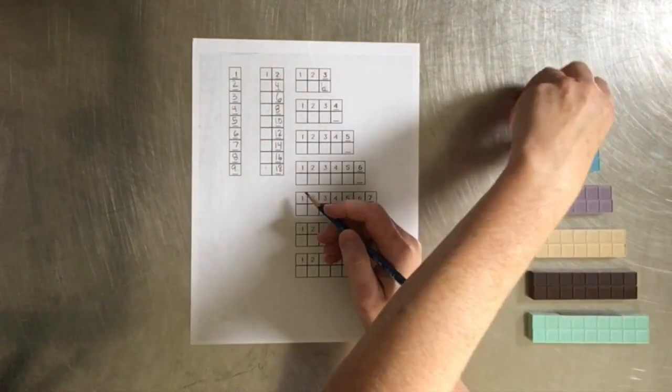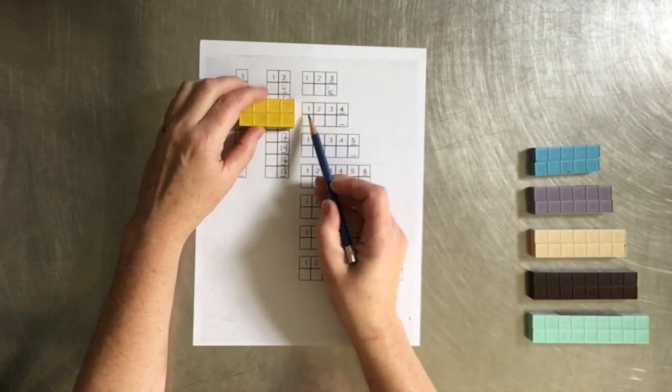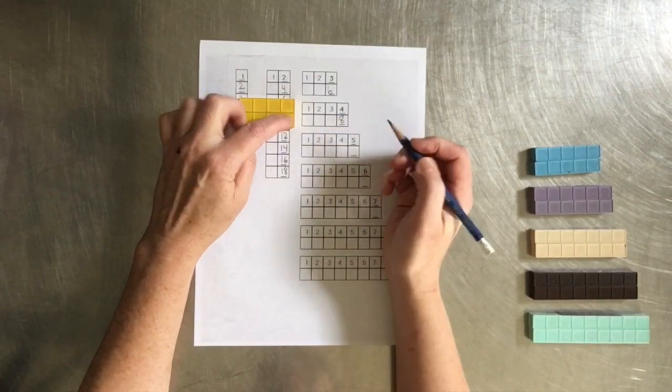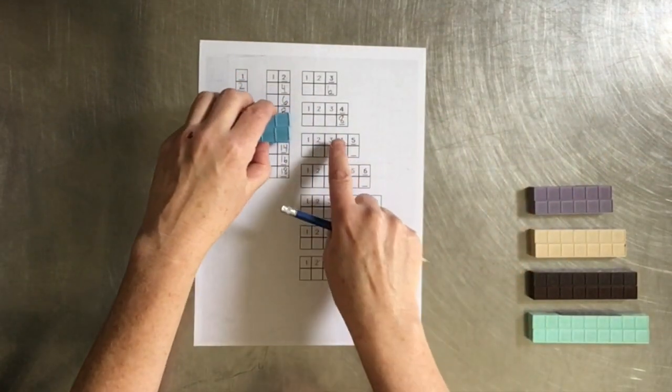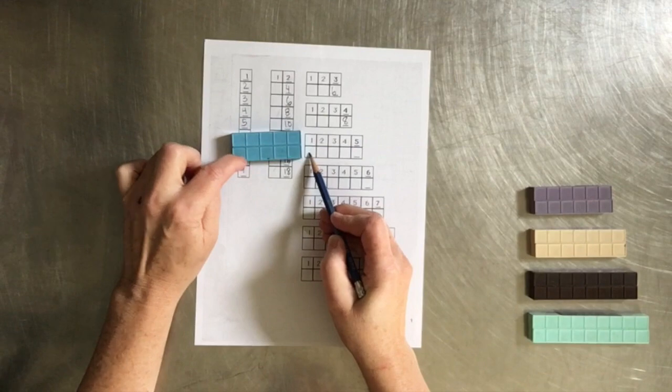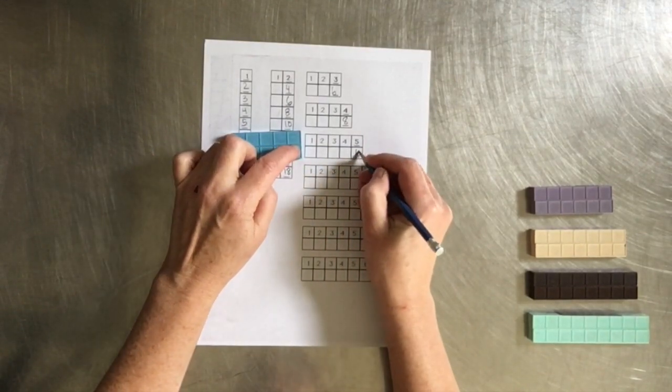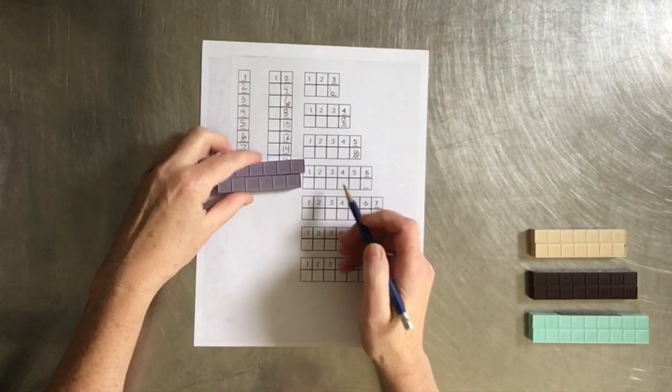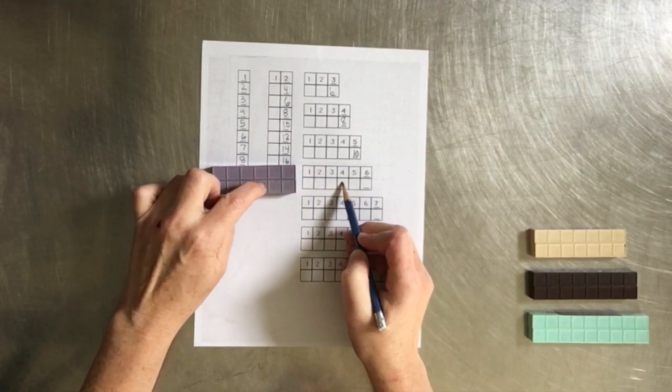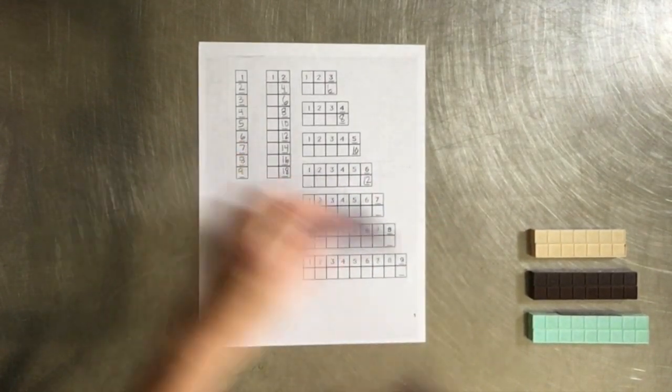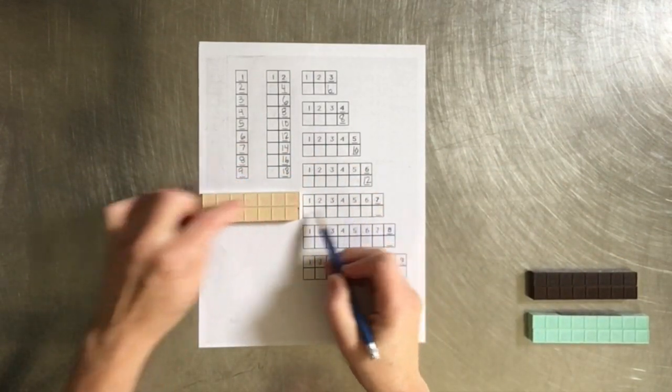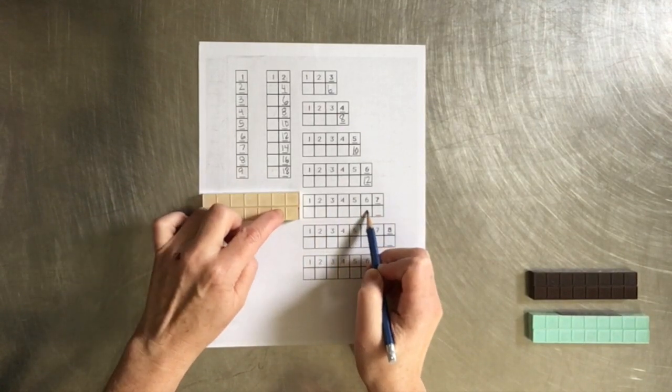The next thing we are doing is counting the 4's. And we are counting 2 of them. So 1, 2, 3, 4, 5, 6, 7, 8. I'm not known for my neat writing. Counting 5's. 1, 2, 3, 4, 5, 6, 7, 8, 9, 10. 1, 2, 3, 4, 5, 6, 7, 8, 9, 10, 11, 12. 1, 2, 3, 4, 5, 6, 7, 8, 9, 10, 11, 12, 13, 14.